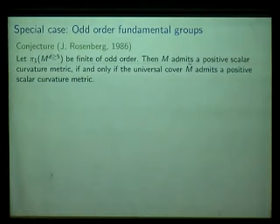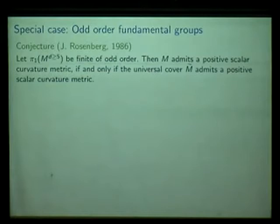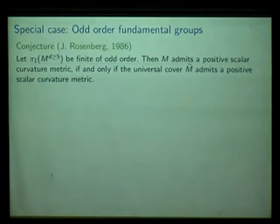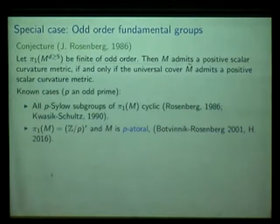In general, in the odd order case the conjecture can be written down in a simpler way, as done in a paper by Jonathan Rosenberg: if we have a finite fundamental group of odd order, then the conjecture says M admits a positive scalar curvature metric if and only if the universal cover does. We can phrase this as a symmetry problem: you have a manifold M-tilde, a finite group of odd order acting freely, and the statement is that M-tilde admits a positive scalar curvature metric if and only if it also admits one which is invariant under the action. One remarkable fact is that we do not know this conjecture in many cases.